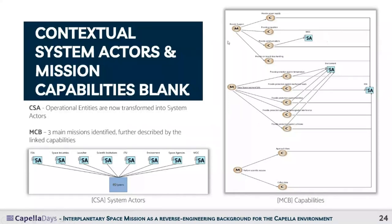From the literature we identified three main missions: provide support, keep the space segment safe, and perform the scientific mission. These can be further described by all the capabilities linked to them, and all missions and capabilities can be linked to actors such as the mission operation center, the environment, and particularly ESA, as shown in the diagram.